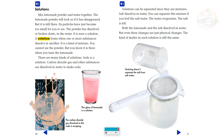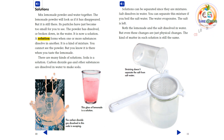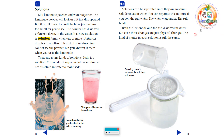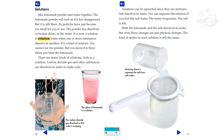There are many kinds of solutions. Soda is a solution — carbon dioxide gas and other substances are dissolved in water to make soda. Solutions can be separated since they are mixtures. Salt dissolves in water, and you can separate this mixture if you boil the salt water: the water evaporates and the salt is left. Both lemonade and salt dissolved in water, but even these changes are just physical changes. The kind of matter in each solution is still the same.